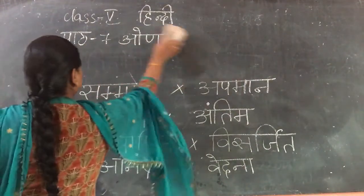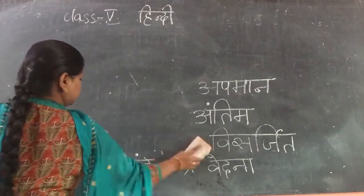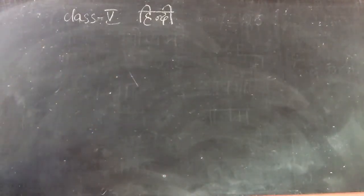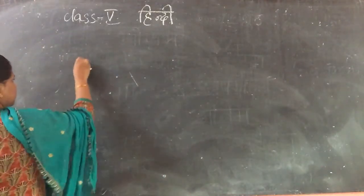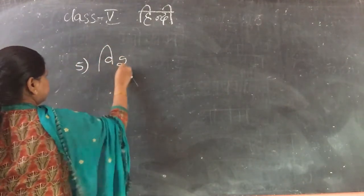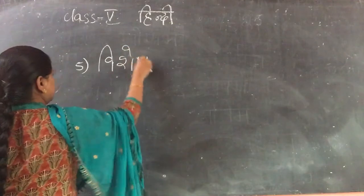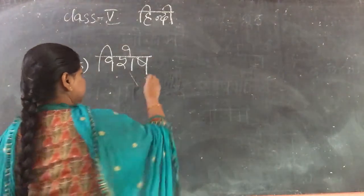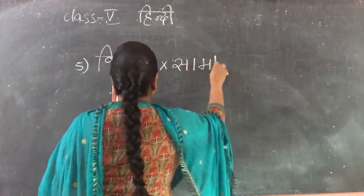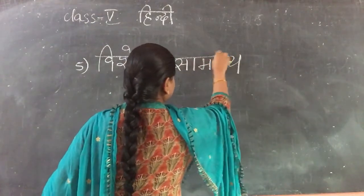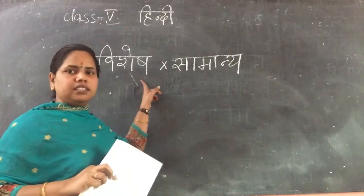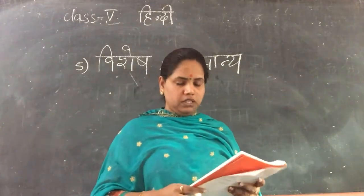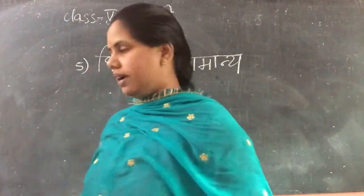Now fifth one: Vishesh means Important or Particular. Its opposite is Samanya, which means Normal. Vishesh means Important, Samanya means Normal. These are five opposite words. Write once and twice in the classwork and twice in the homework.